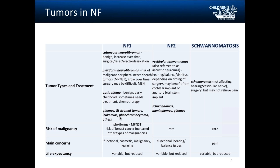In NF2, we see vestibular schwannomas, also referred to as acoustic neuromas. These can cause hearing and balance issues, as well as tinnitus — ringing in the ear. Depending on the timing of surgery, many people may benefit from a cochlear implant or auditory brain stem implant, because these tumors will eventually cause a loss of hearing. In NF2, we also see schwannomas, meningiomas, and gliomas growing in the central nervous system. In schwannomatosis, we often see schwannomas that do not affect hearing or the vestibular nerve — that is one way we can differentiate between an NF2 and a schwannomatosis diagnosis. Sometimes surgery can help with these tumors, but they often cause a lot of pain, and surgery may not relieve that pain.